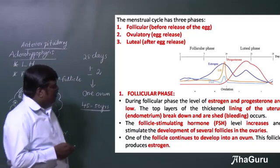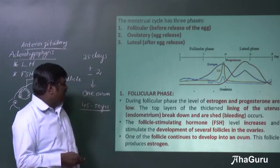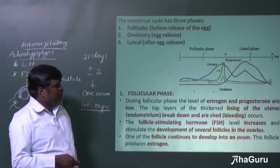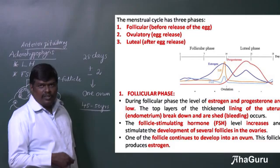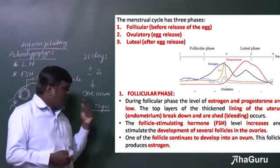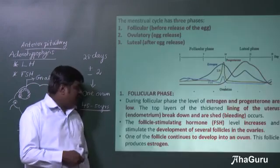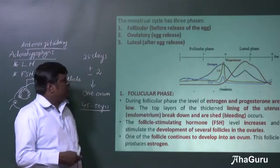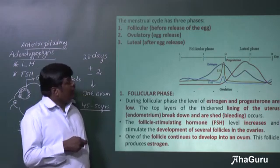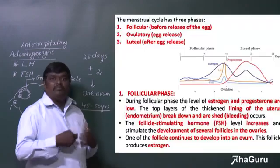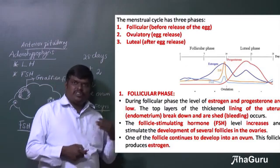As FSH level increases, it stimulates the development of several follicles in the ovary, and one of those follicle cells develops into an ovum. That follicular cell also produces the hormone estrogen. So in the follicular phase, estrogen and progesterone level is low, while FSH level is increased.